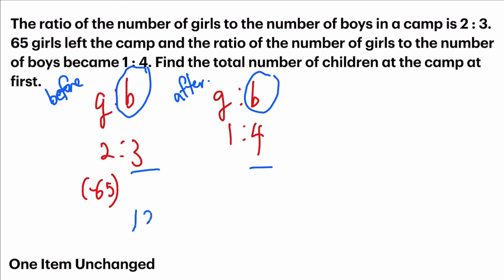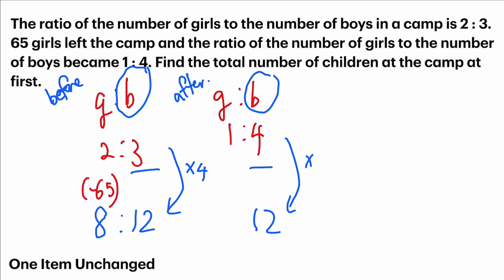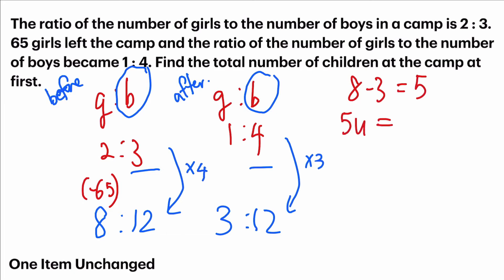For the left-hand side ratio, multiply by 4: 2 times 4 gives us 8. For the right-hand side, multiply by 3: 1 times 3 gives us 3. Now let's analyze the ratio for girls: before there were 8 units, after there were 3 units. So 8 minus 3 equals 5 units. That 5 units refers to the 65 girls that had left the camp.